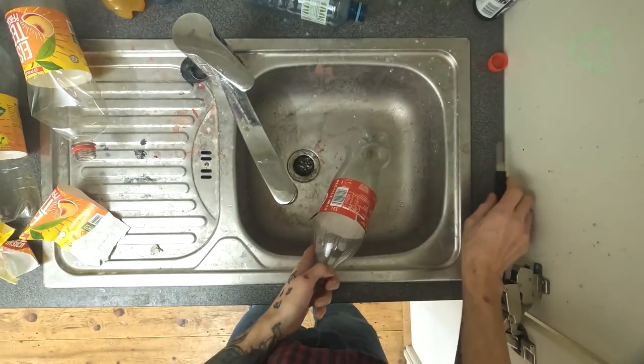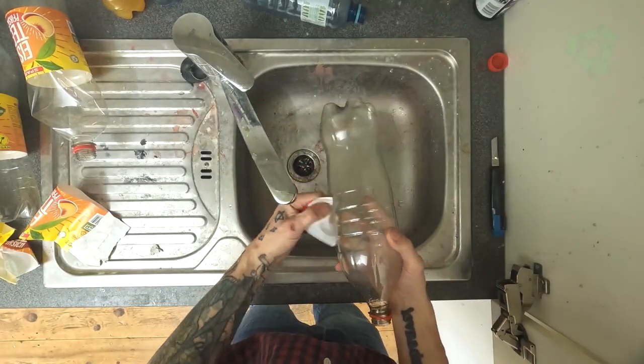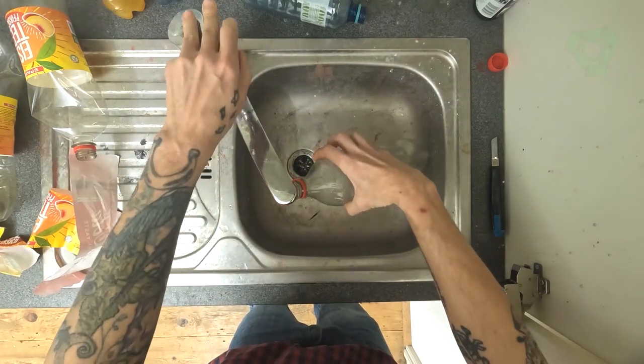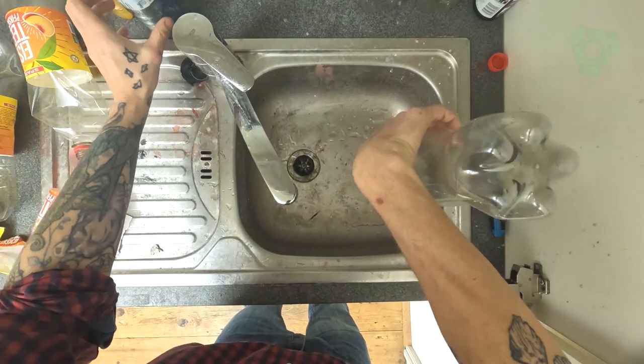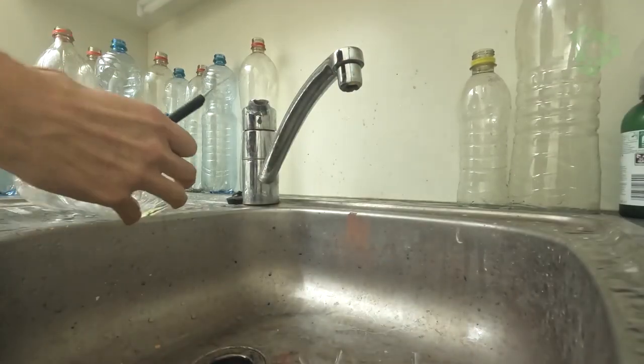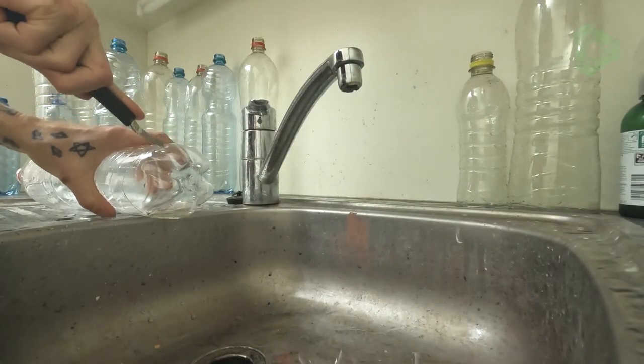Clean. You want to clean all of the bottles that you collect so that nothing gets stuck inside of your filament and causes it to jam up your printer nozzle. Strip the label off as best you can. Remove the top, rinse out, and cut the bottom off of each.